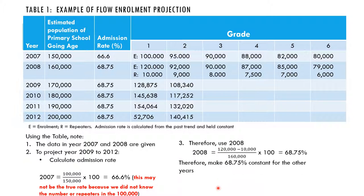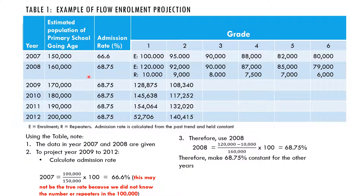In 2008, 120,000 students enrolled, of whom 10,000 are repeaters. So we remove 10,000 from 120,000 to get the actual number of new students who enrolled in Grade 1, then divide by 160,000 and multiply by 100. That gives us 68.75 percent. This rate of 68.75 percent is then kept constant for all the other projection years.